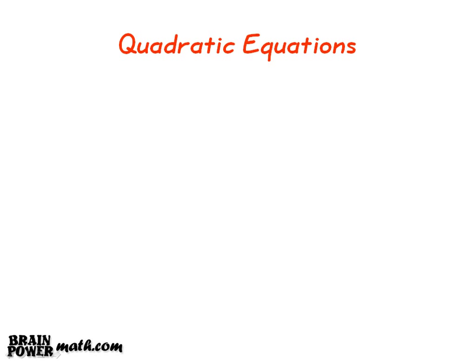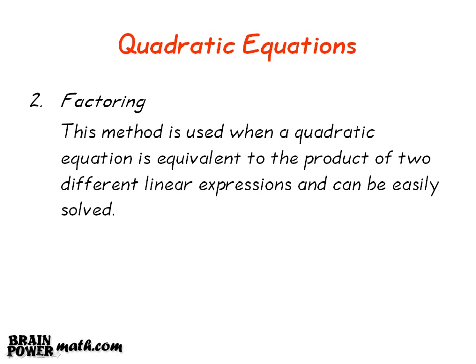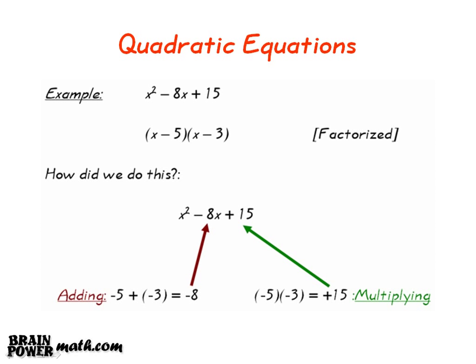Let's now look at the factoring method. This method is used when a quadratic equation is equivalent to the product of two different linear expressions, and can be easily solved. For example, we have the expression x squared minus 8x plus 15. When factorized we get (x minus 5) multiplied by (x minus 3). We need to find two terms that multiply to give plus 15, and that add to give minus 8. The two values that satisfy these requirements are minus 5 and minus 3.